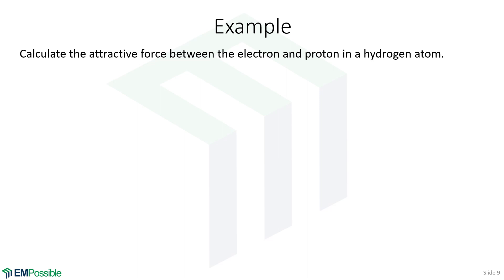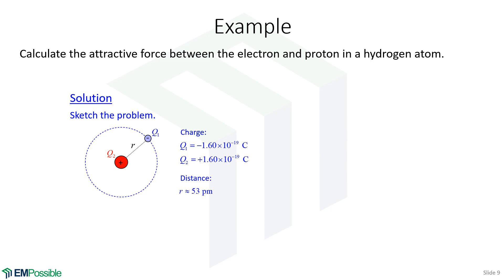Let's finish off our discussion of Coulomb's law with an example — let's calculate the attractive force between the electron and a proton in a hydrogen atom. So our solution, as always, starts by sketching the problem. I drew essentially the Bohr model of an atom, which treats the electrons as orbiting in a circular pattern around the nucleus. We'll have a positively charged nucleus due to a proton and a negatively charged electron — the charge is 1.6 times 10 to the minus 19 Coulombs. The radius of a hydrogen atom is around 53 picometers, which is roughly the separation between the two charges.